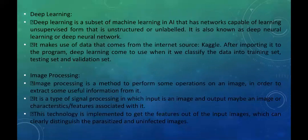Image processing is the method to perform operations on an image in order to extract useful information. It is a type of signal processing in which the input is an image and the output may be an image or features of it. This technology is implemented to extract features from input images that can clearly distinguish between infected and uninfected images. In our project, if a patient has malaria, the image will show as infected, otherwise as uninfected.